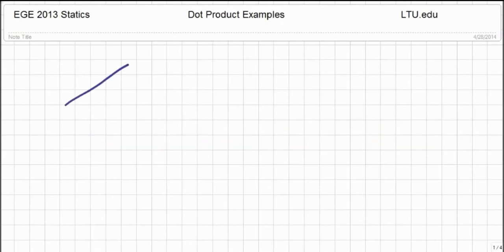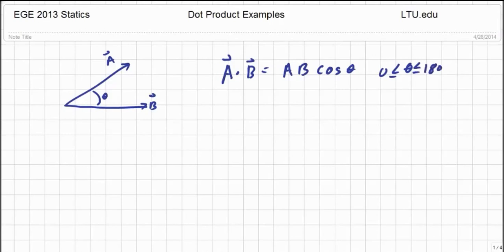If I have two vectors, we'll call that one A and we'll call this one B, and there is some angle theta between them. I say that the dot product A dot B is by definition AB, where those are the magnitudes, times the cosine of theta, where theta is between 0 and 180 degrees and represents the smallest angle between those vectors.